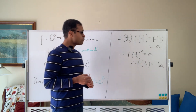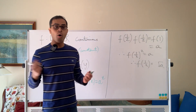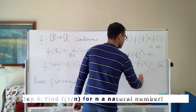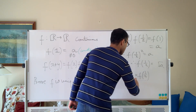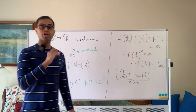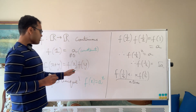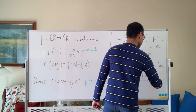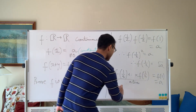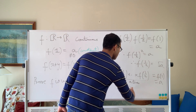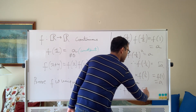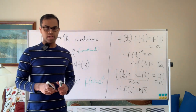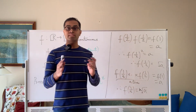So f(1/2) = √a. Now we can find f(1/n) for any n. f(1/n) multiplied n times equals f(1/n + 1/n + ... + 1/n) = f(1) = a. So f(1/n)ⁿ = a, meaning f(1/n) is the nth root of a. There's always a unique non-negative nth root, so we know uniquely what f(1/n) is for all n.